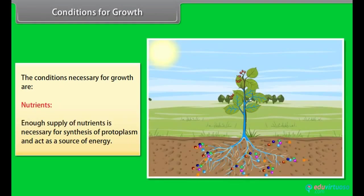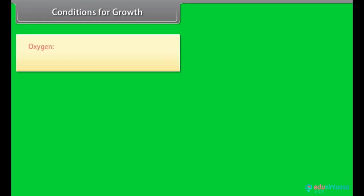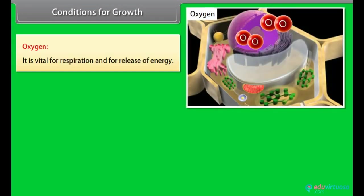Conditions for growth. The conditions necessary for growth are nutrients. Enough supply of nutrients is necessary for synthesis of protoplasm and act as a source of energy. Water. An adequate supply of water is essential for growth. It maintains cell turgidity which enhances growth. It also provides medium for enzymatic reactions. Oxygen. It is vital for respiration and for release of energy.